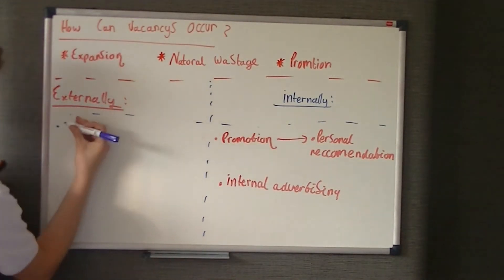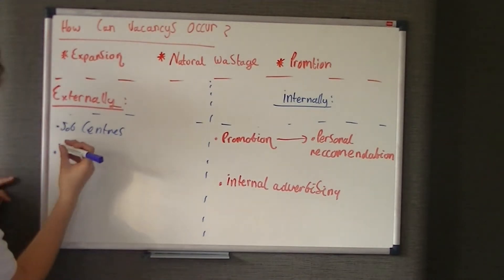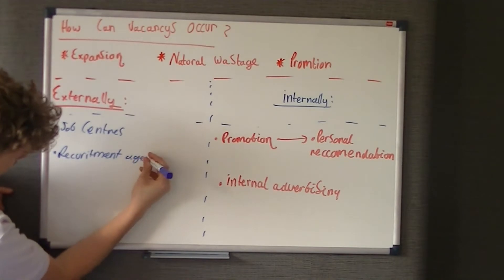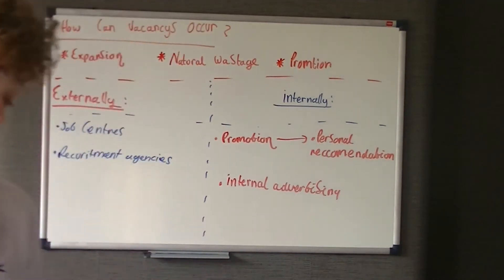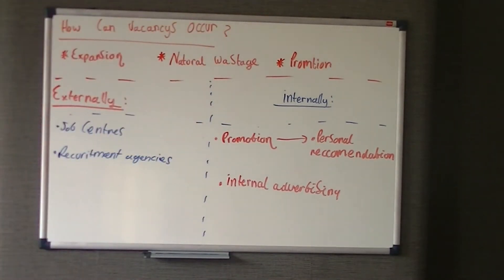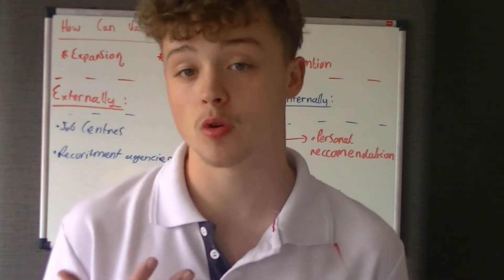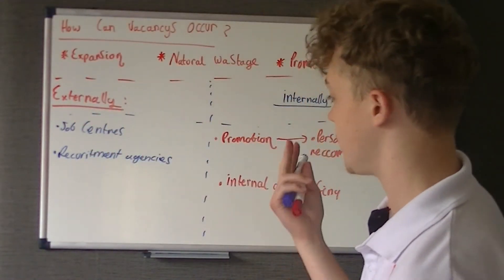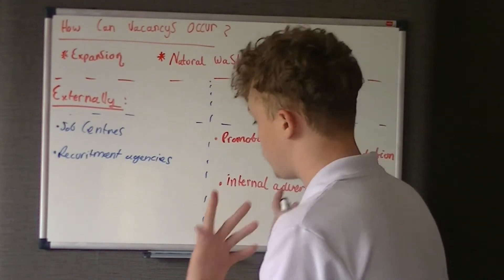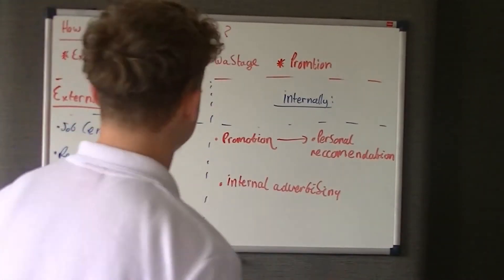Externally, an obvious one would be job centres. Another one could be a recruitment agency. Recruitment agencies are quite a good idea because they're specialised in finding people with the correct skills, and they help link people - allowing the business to continue with its work, investing in new products and research and development. However, they cut into the business's profits as they're offering a service of finding candidates for you, and they're going to include their own profit margins into that service.